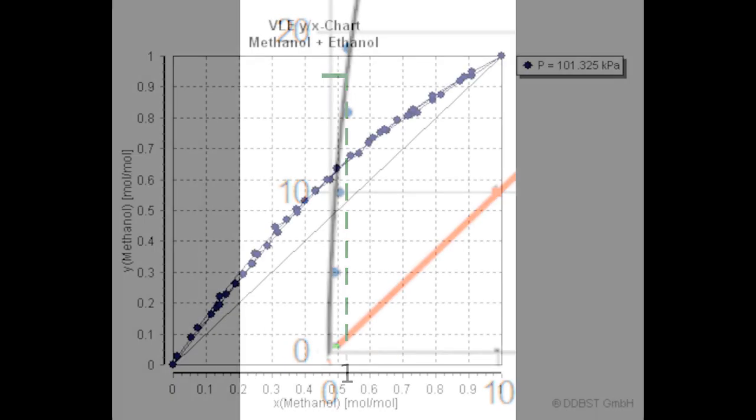The ratio of methanol to ethanol in the foreshots will be similar to the ratio in the wash, and it looks as though the ratio will not change much into the hearts. The binary ethanol-methanol phase diagram is relevant to the separation of heads at the top of the fractional distillation column, where the azeotropic ethanol and water mixture behaves similarly to ethanol.